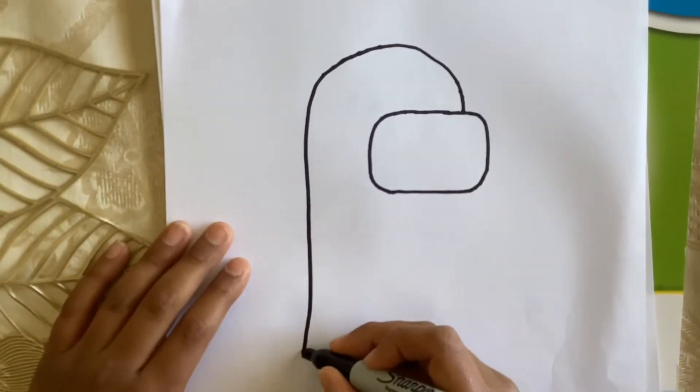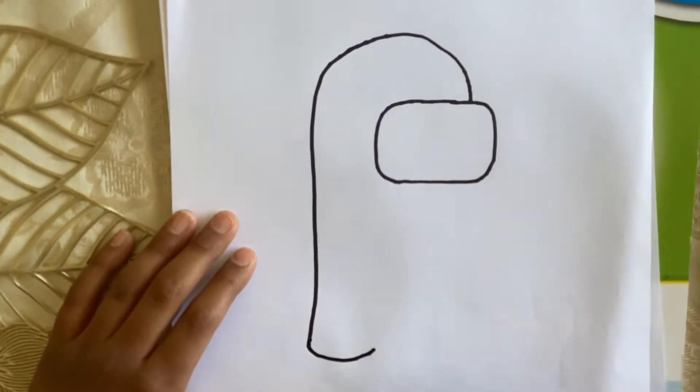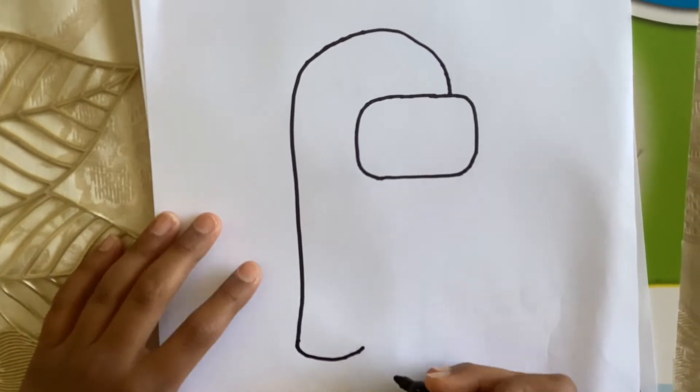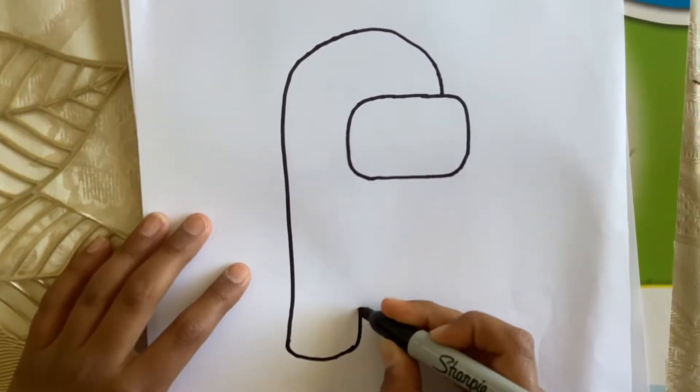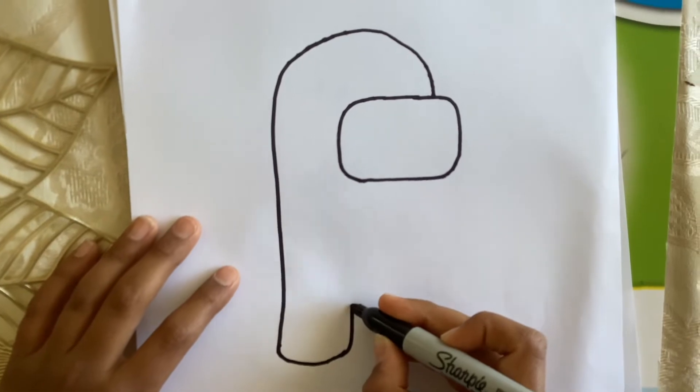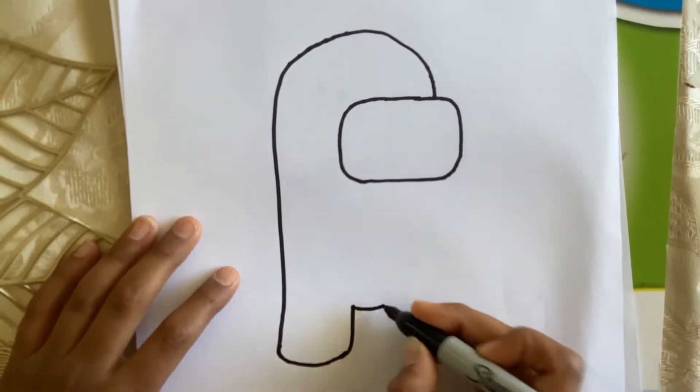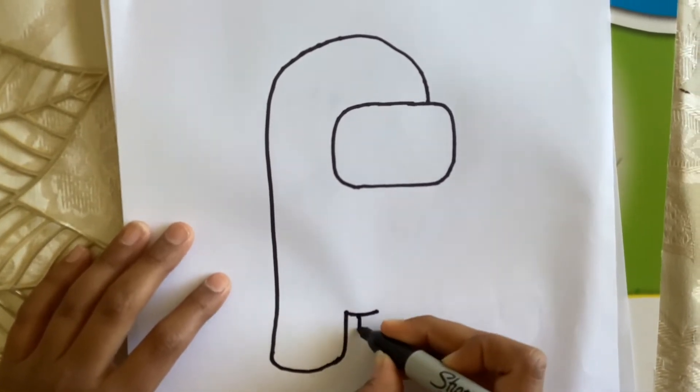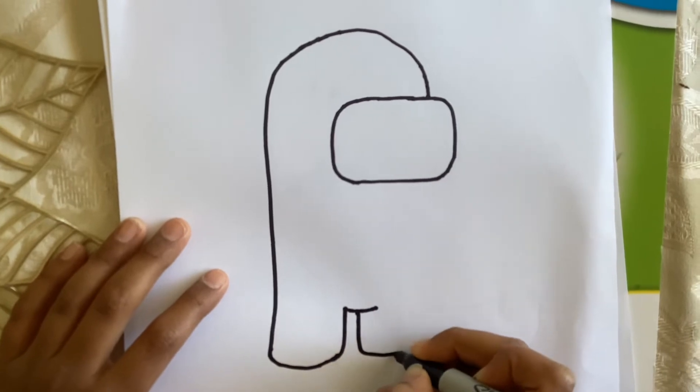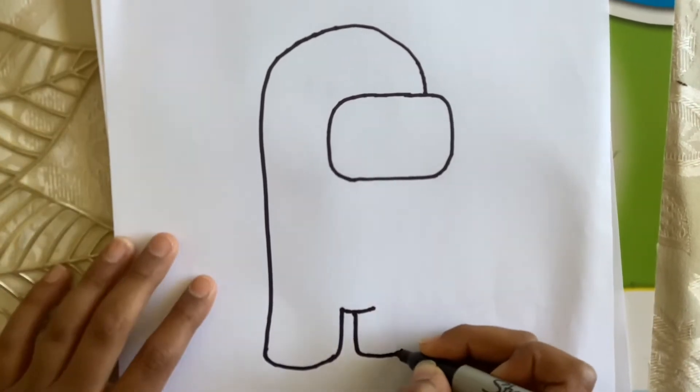Next we're going to draw a curve for the foot, then go back up. Then we're going to draw a curve line like that, go back down, and curve around like this leg.